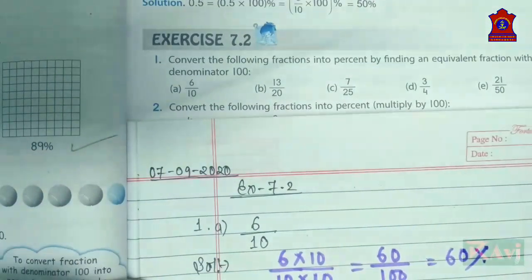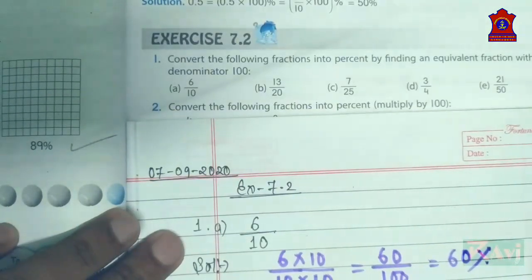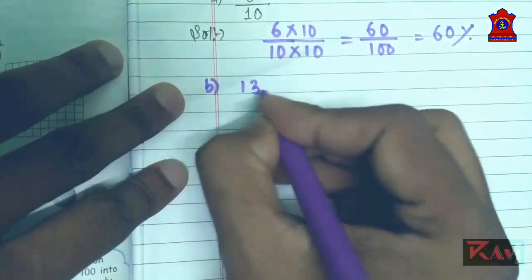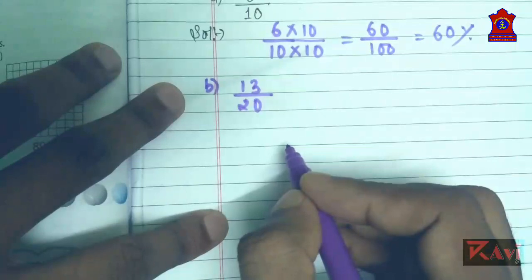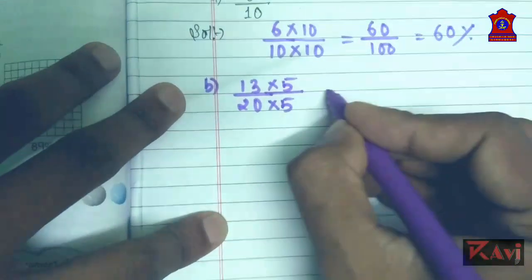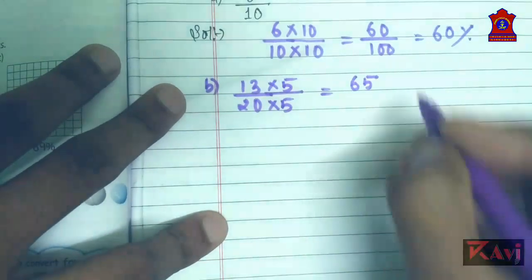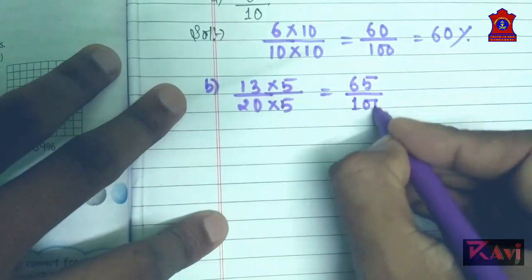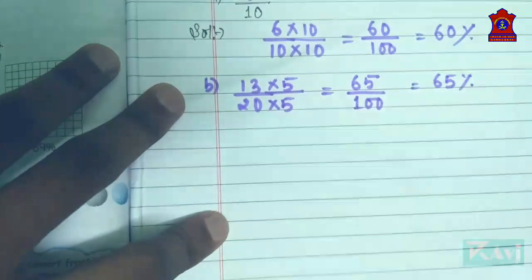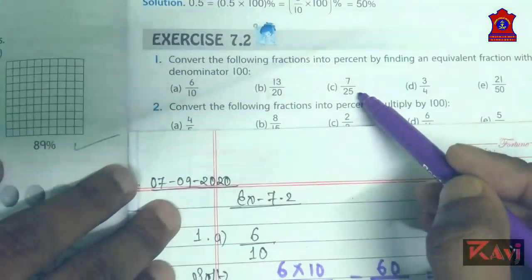Now question number 1b: 13 upon 20. You know 20 into what makes 100? Twenty into five makes 100. So 13 fives are 65, and 20 into 5 is 100. So 65 out of 100 means 65 percent. Clear?